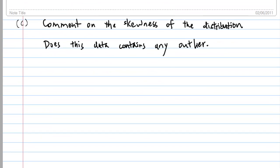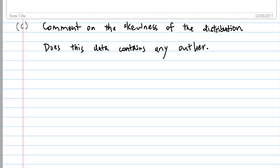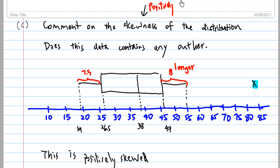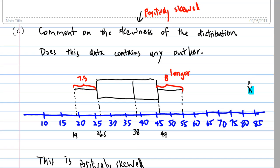Finally, comment on the skewness of the distribution. Does this data contain any outlier? Note that this data is positively skewed. The reason is because the length of the second whisker is from 47 to 55, and the length is 8, whereas the length of the first whisker is from 19 to 26.5, and the length is 7.5. So the second whisker is longer, that's why the data is positively skewed. And there is an outlier which is 84.